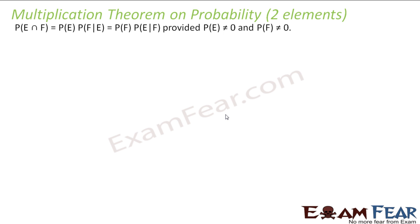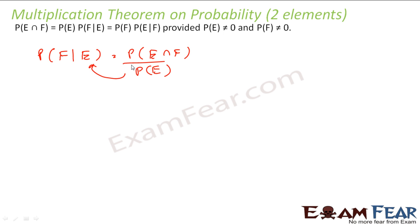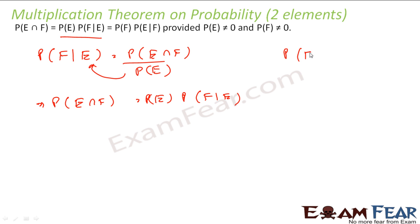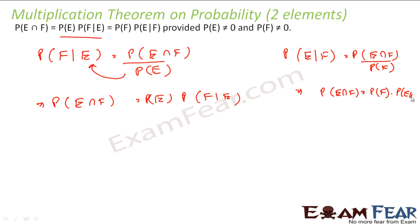I will understand a new topic called multiplication theorem on probability, and this is for two elements E and F. This is derived from the earlier formula: probability of E given F is nothing but P(E∩F) / P(E). Rearranging, probability of E intersection F is probability of E into probability of F given E. Similarly, probability of E intersection F is probability of F into probability of E given F.